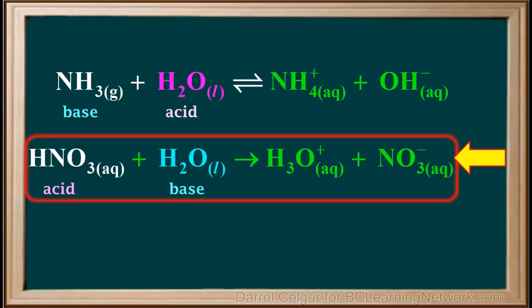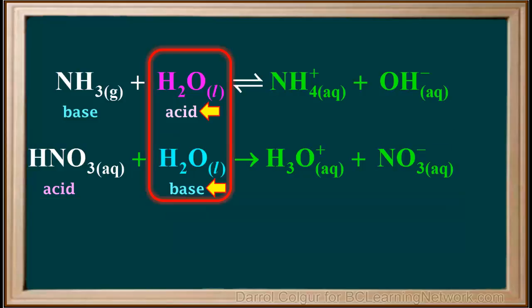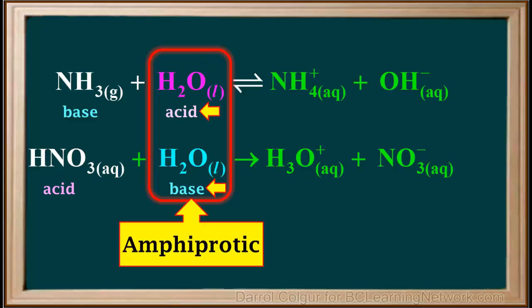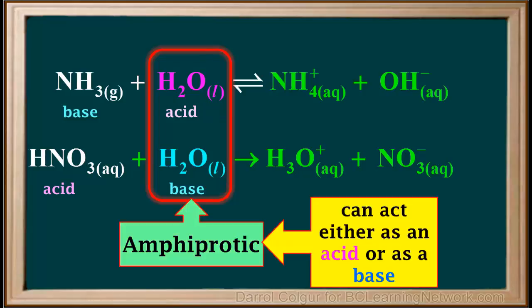Looking at the previous reaction where HNO3 reacts with water, water acted as a base. So depending on what it's reacting with, water can play the role of an acid or a base. Such a species is said to be amphiprotic. An amphiprotic species is one that can act either as an acid or as a base, depending on what it's reacting with. Water is one amphiprotic substance, and there are many more.